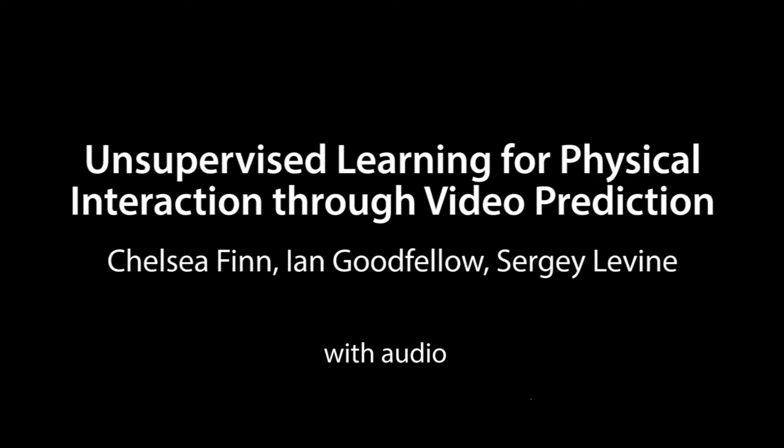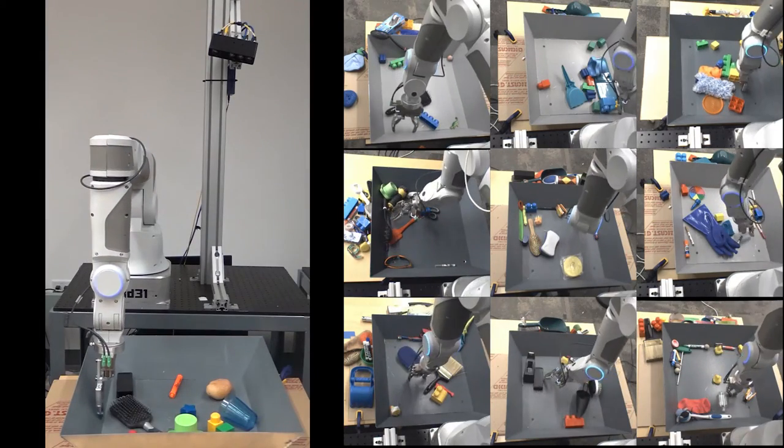We present a video prediction method for unsupervised learning about physical interactions. We collected a video data set of physical interactions using an array of 10 robots.